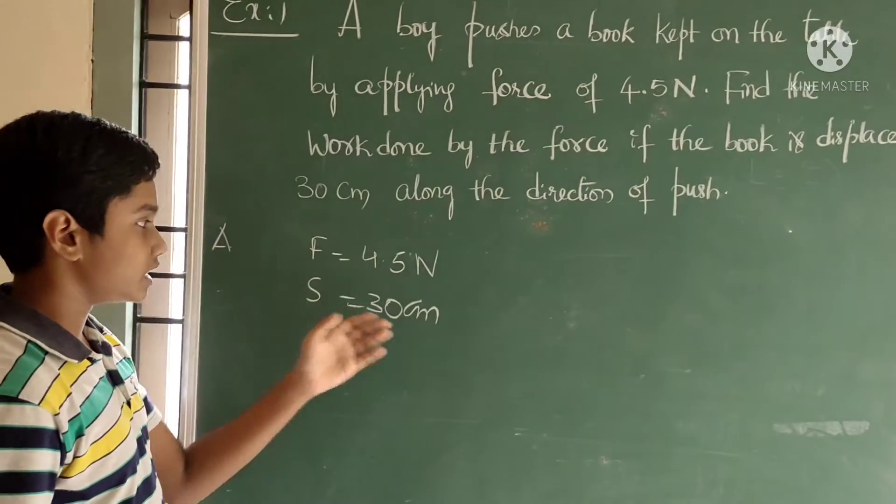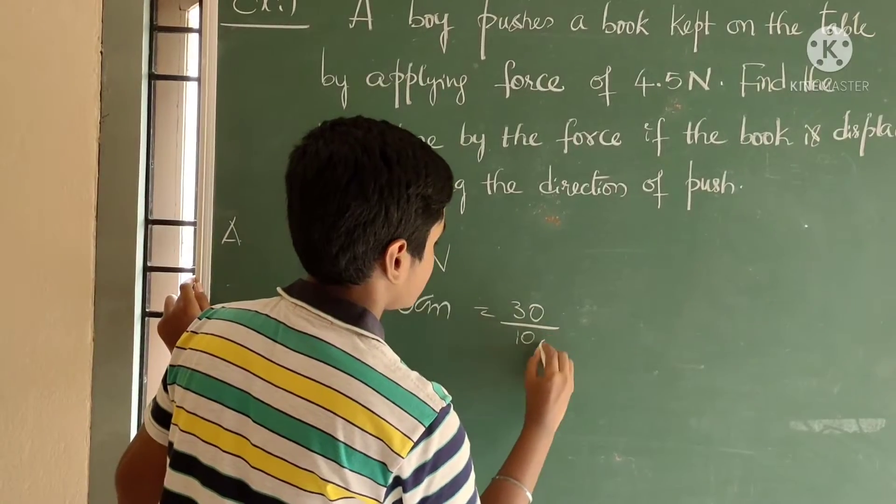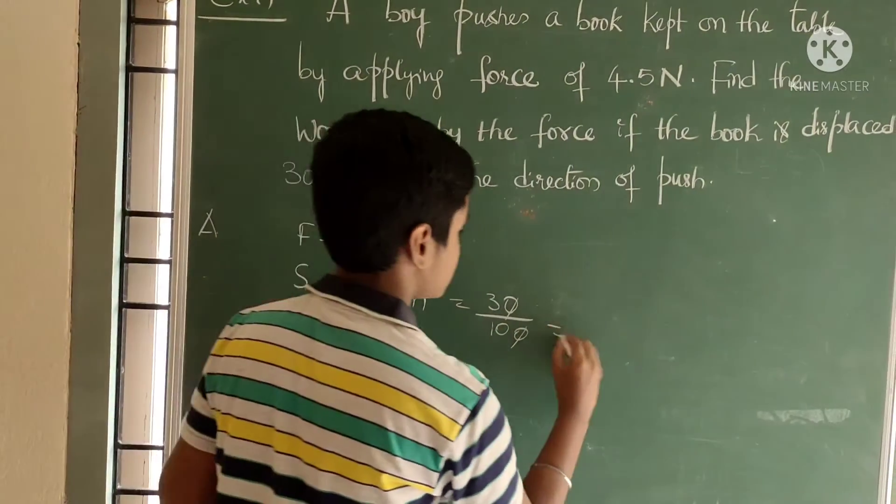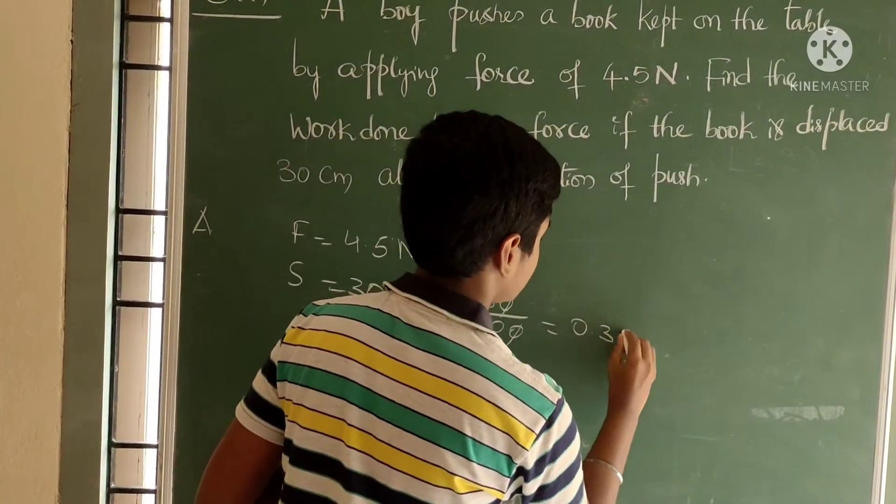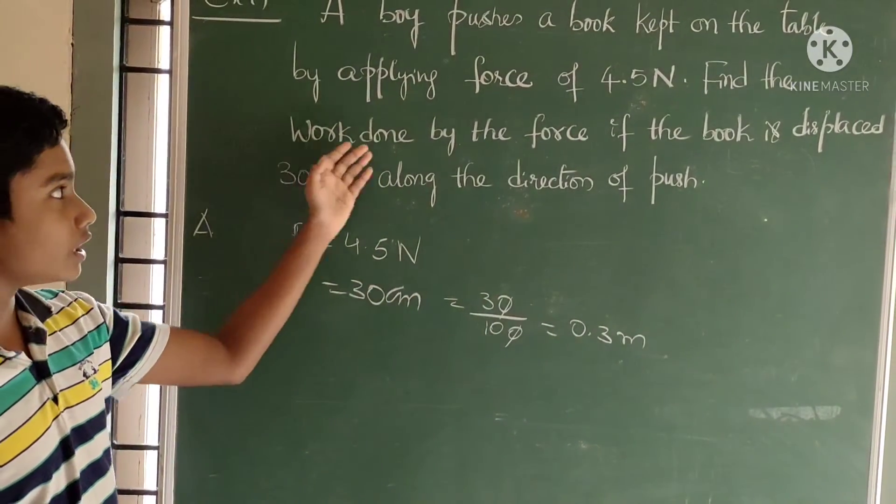Now we have to convert centimeters into meters. That means 30 by 100. Therefore, 0.3 meters we got. Here they asked to find the work done by the force.